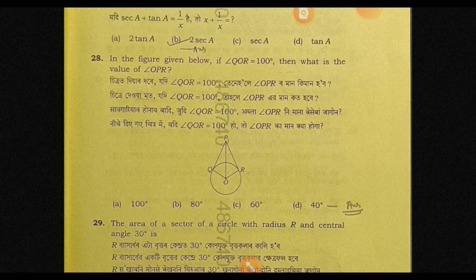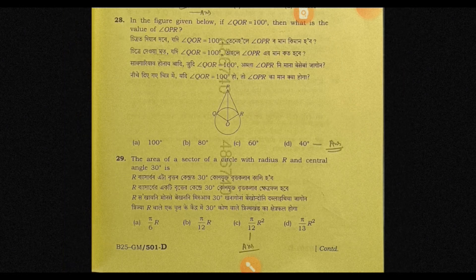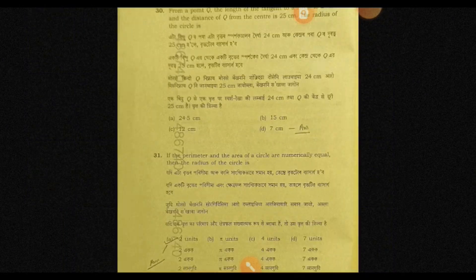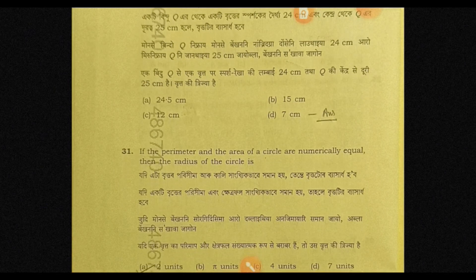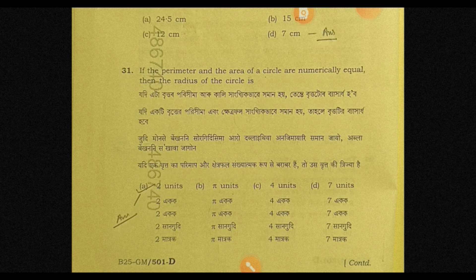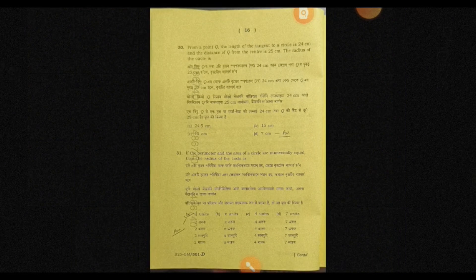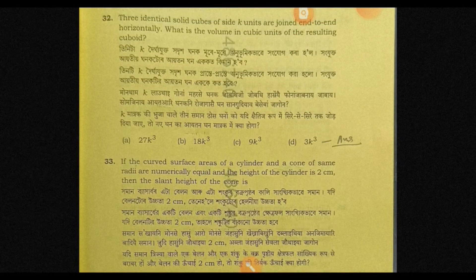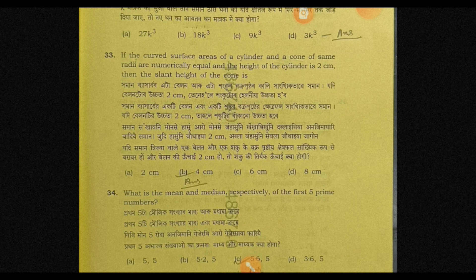Question 28, answer option D — minus 40 degrees. Question 29, answer option C — 5/12 r squared. Question number 30, answer option — 7 cm. Question 31, answer option A — 2 units. Question 32, answer option D — 3k cubed. Question 33, answer option B — 4 cm.